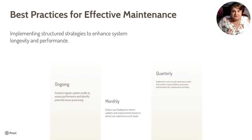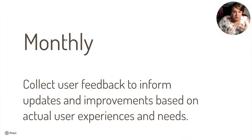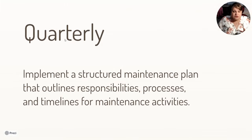Best practices for effective maintenance — implementing structured strategies to enhance system longevity and performance. On an ongoing basis, conduct regular system audits to assess performance and identify potential issues proactively. Monthly, collect user feedback to inform updates and improvements based on actual user experience and needs. Quarterly, implement a structured maintenance plan that outlines responsibilities, processes, and timelines for maintenance activities.